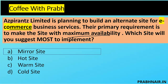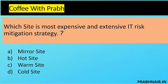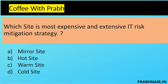Next coffee shot: which site is most expensive? The keyword is 'most expensive' and 'extensive risk mitigation strategy.' Mirror site definitely offers maximum availability and can mitigate maximum risk. Option B, hot site, is comparatively less than mirror site in terms of availability. Warm site has people, process, and partial technology but no server and no data, so it's less than hot site. Cold site we can ignore. So the most expensive option is mirror site, because in both locations we need the same people, process, technology, and data. The answer is A.